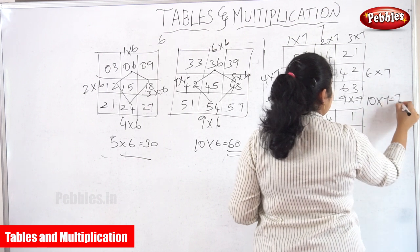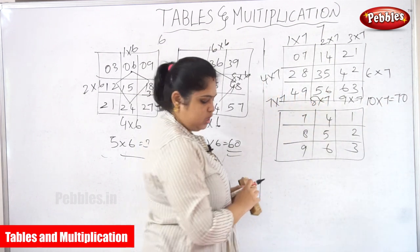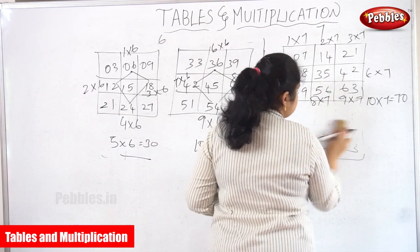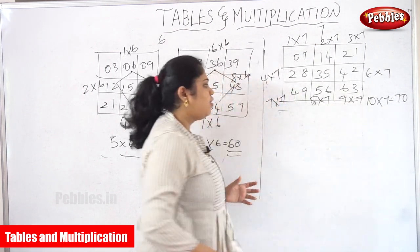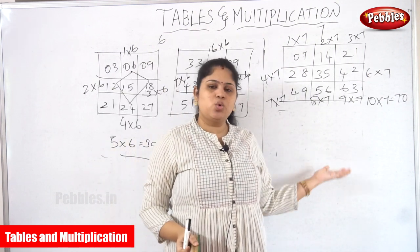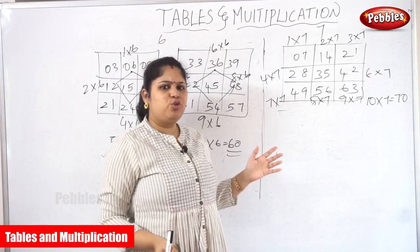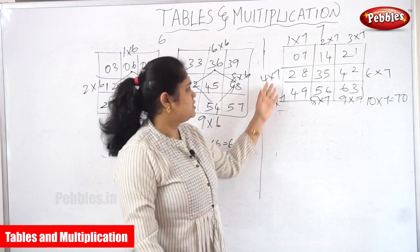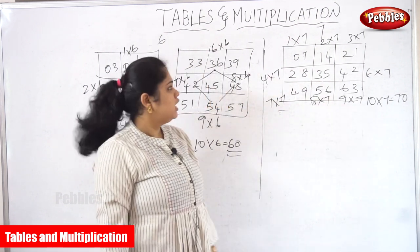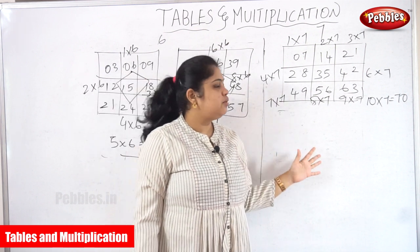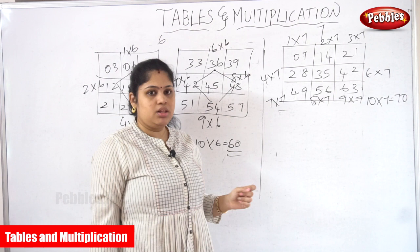10 into 7 is 70. So this is the grid method we are going to follow. Why have I written the second set? To read 11 and 12 — but it's more than enough to read up to 15. Up to 10 into 7 is enough. So this is the grid method we follow to read the 7th table.